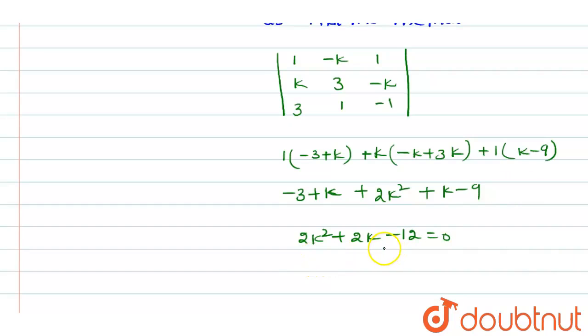Divide the whole equation by 2, so k square plus k minus 6 equals 0.